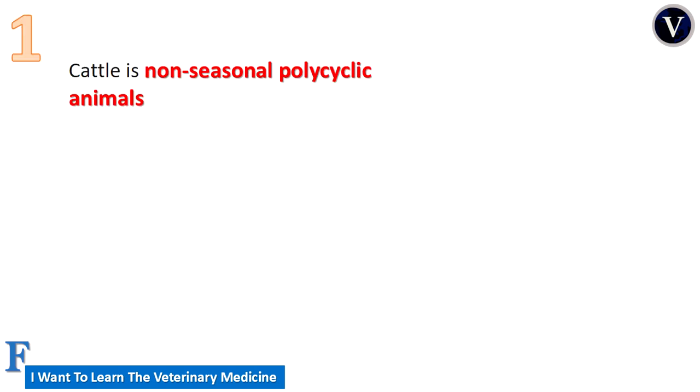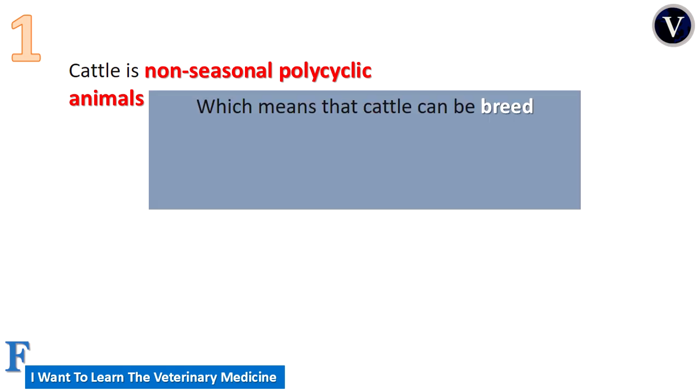First, cattle is a non-seasonal polycyclic animal. What is the meaning of non-seasonal polycyclic animal? It means that cattle can be bred at any time during the year.